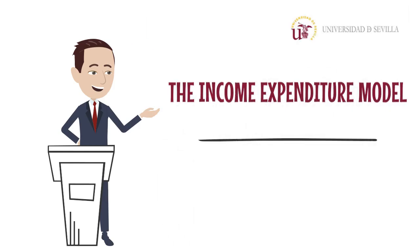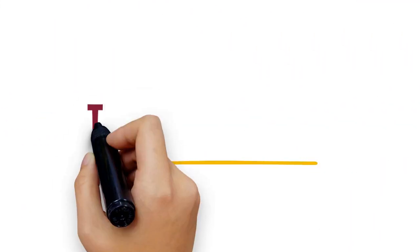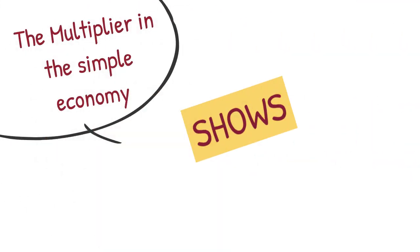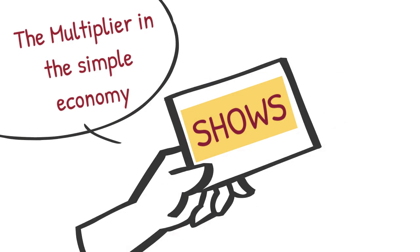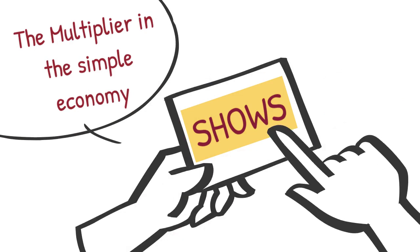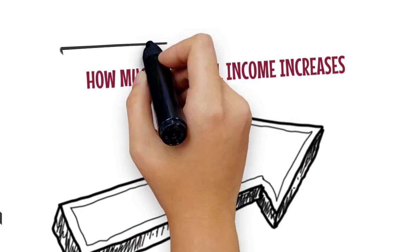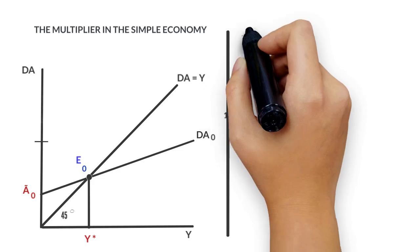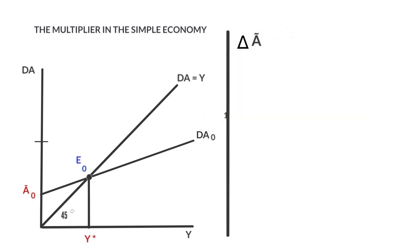The income expenditure model: the multiplier in a simple economy. The multiplier in a simple economy shows how much national income increases due to an initial increase of the autonomous expenditure. That is, an increase in A leads to an increase of national income.